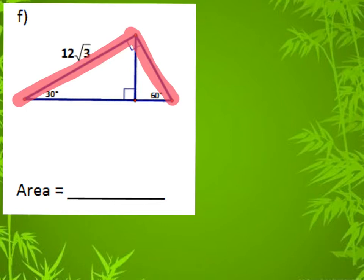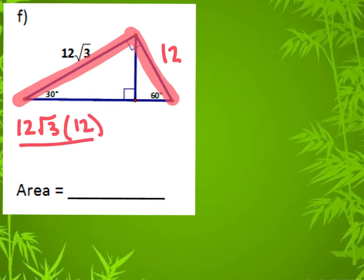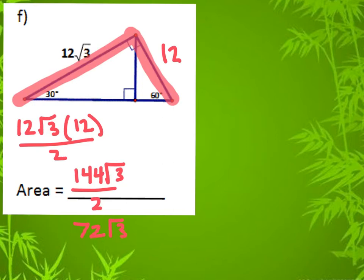For the easier way: 12√3 divided by √3 is just 12. So I'll do the work over here — 12√3 times 12 divided by 2, which is 144√3 divided by 2. The final answer is 72√3 units squared.